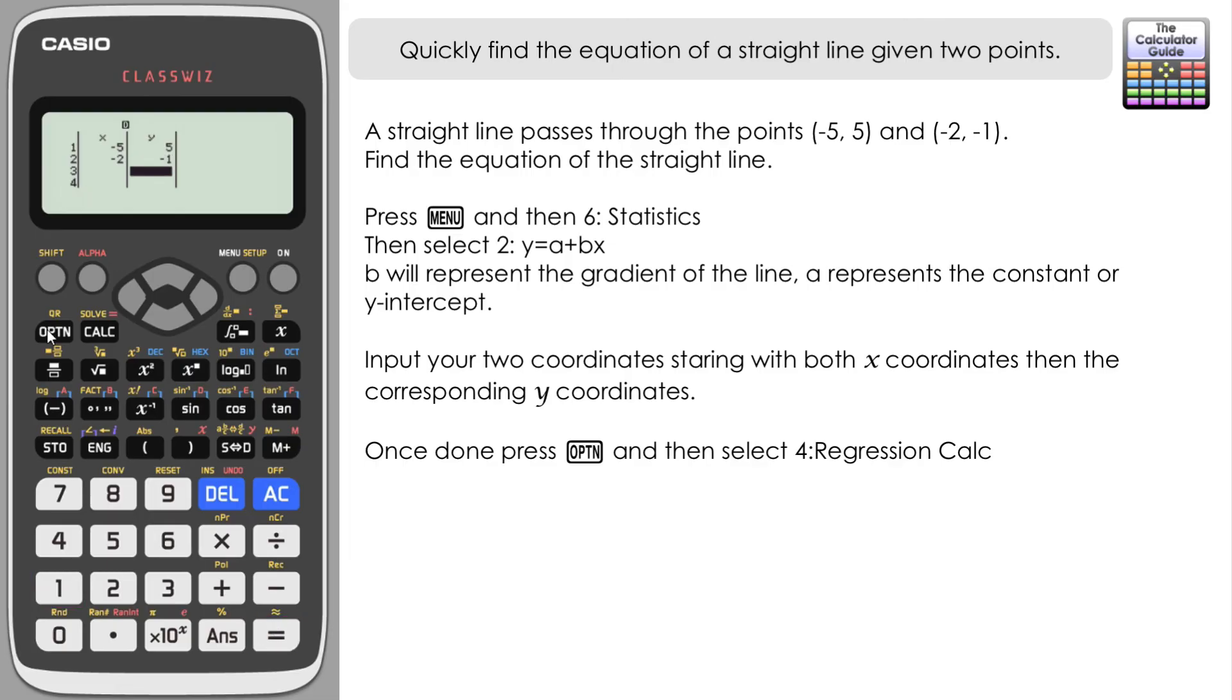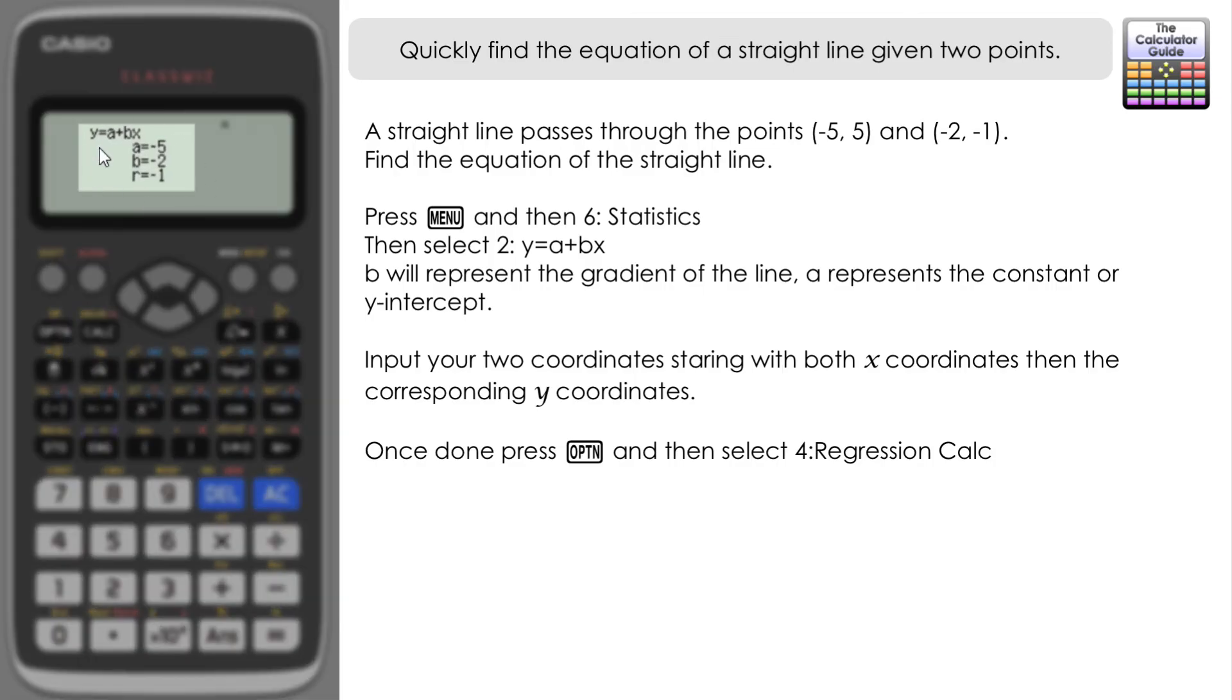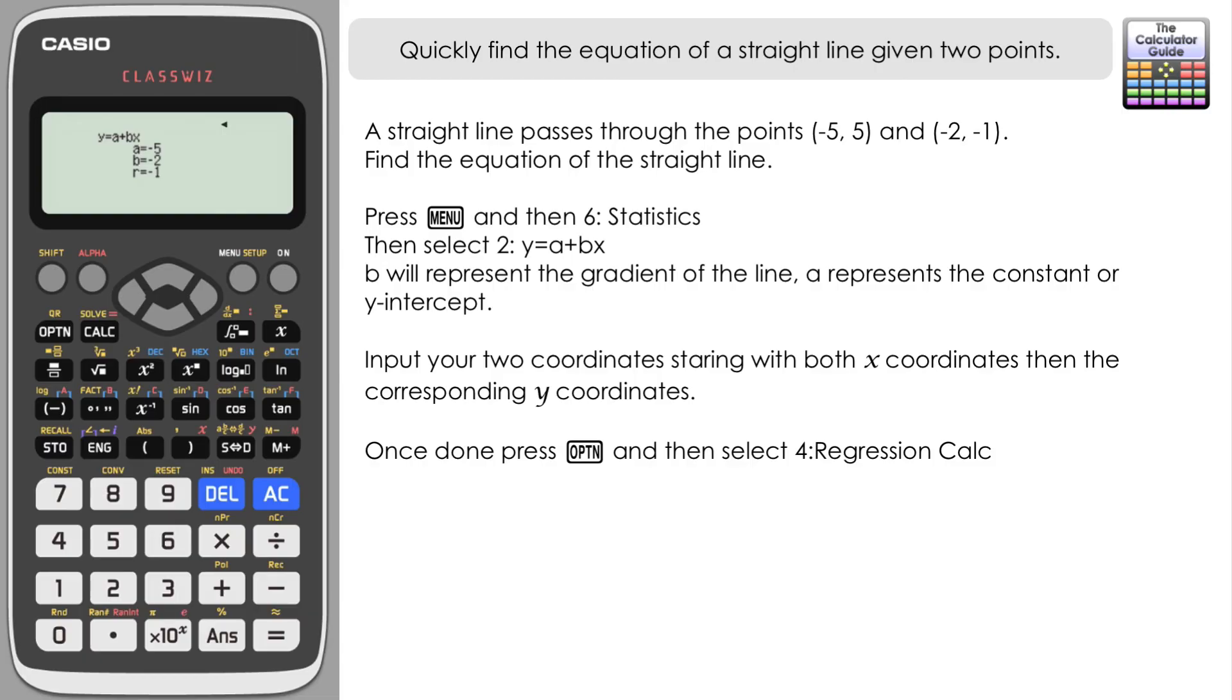And once again it's option and regression calc here. And let's have a look at putting the components together that we have. Remember that the b is the gradient that we want, so our gradient here is -2. And a would represent the y-intercept, the constant in that, so here we have -5. So the equation of a line is y = -2x - 5.